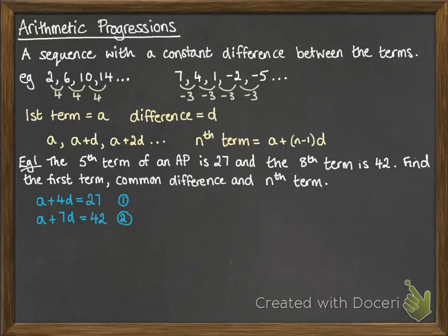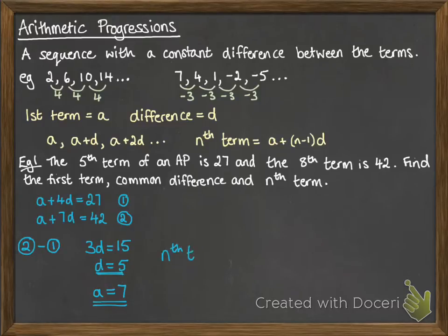So, then by simultaneous equations, we can work out that 3D is 15, so D is 5. So, we've found the common difference. From there, we can work out what A is. So, A has to be 7, again just using those simultaneous equations. So, that gives us the first term. And now, the nth term, we can just write in our A and D values into our formula for the nth term. And that is 7 plus 5n minus 1.